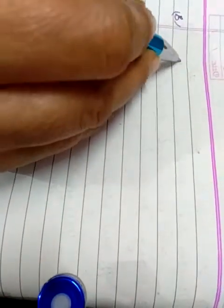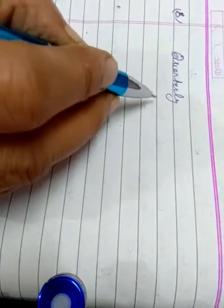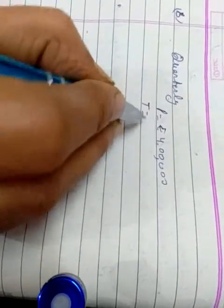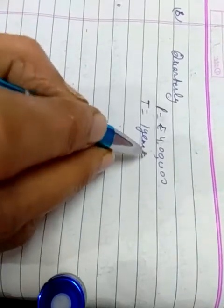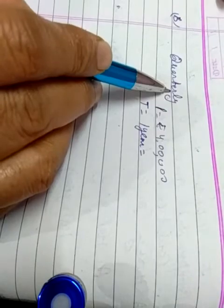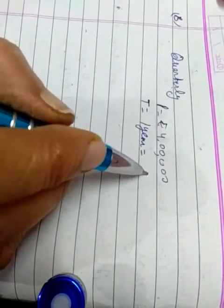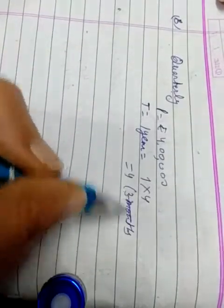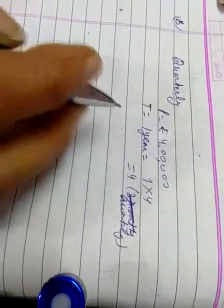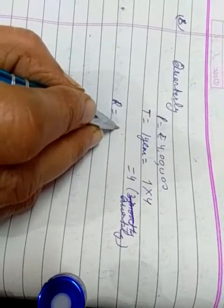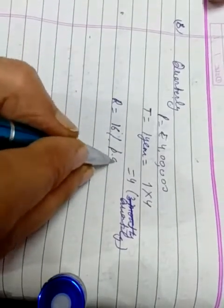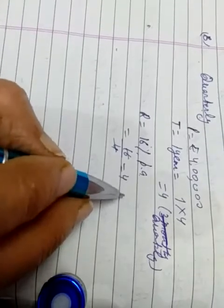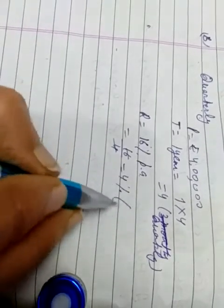Now Part B: quarterly. P is equal to rupees 4,00,000. Time is equal to 1 year. If quarterly, we multiply time by 4: 1 into 4 means 4 quarters. R is equal to 16% per annum divided by 4: 16 upon 4 gives 4% quarterly.